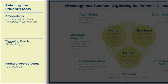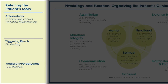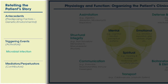On the left side of the matrix, the patient's clinical history is organized into three main categories: antecedents, triggers, and mediators. Antecedents are the factors that predispose a person to illness. Triggers are events that provoke disease and may push the patient over the edge, resulting in a diseased state. Mediators are behaviors or events that perpetuate the disease process.